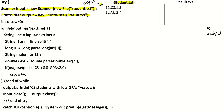We need to count how many students are CS with GBA below 2, so we need a counter. We will call it csLow with an initial value of zero. Now we have to iterate for each line in our input file, so we say while(input.hasNextLine()) — if there is a line, go and do the processing.